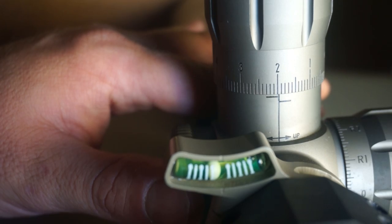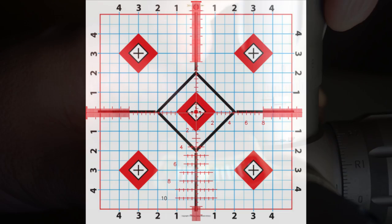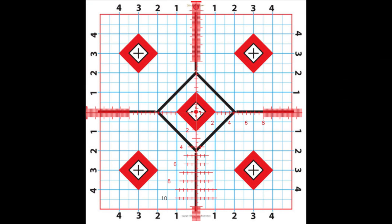So let's take a look at how easy it is to zero with matching turrets and then we'll look at the advantages of first focal plane. After bore sighting, shoot three shots at the center of the target. With first focal plane, this can be at any distance or magnification.